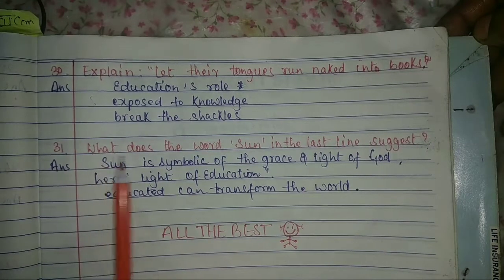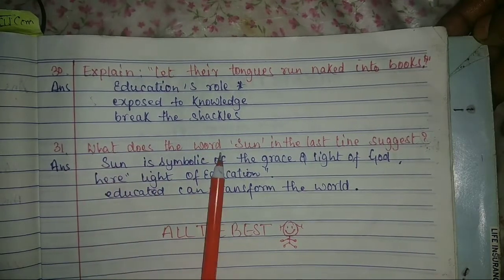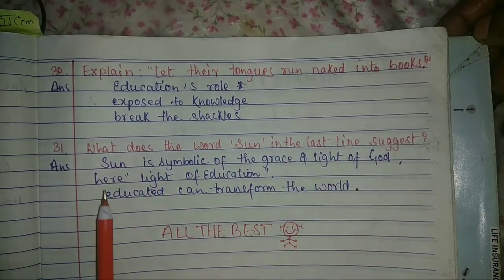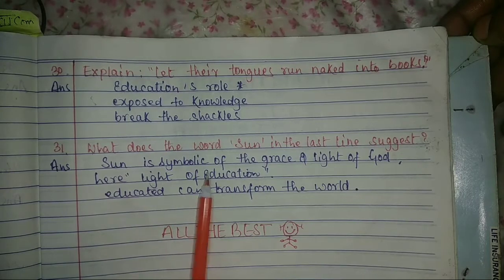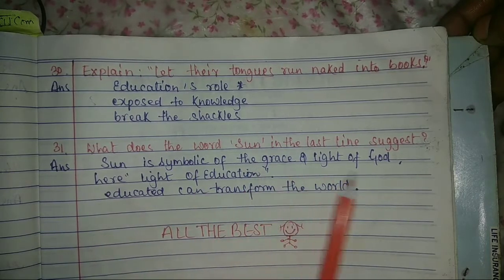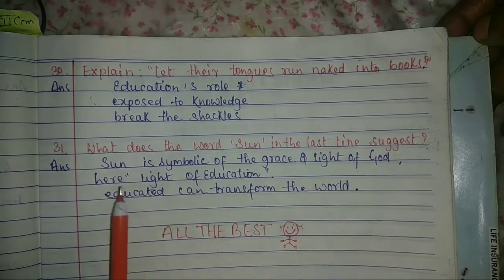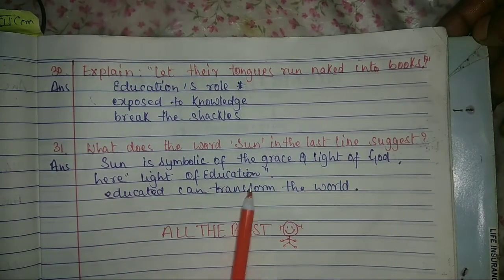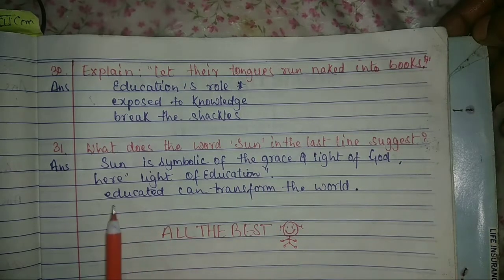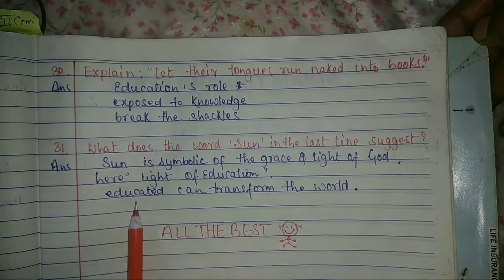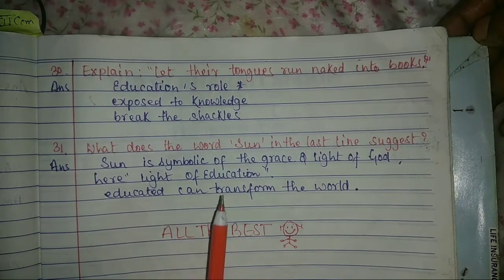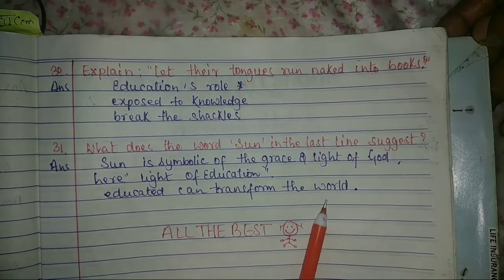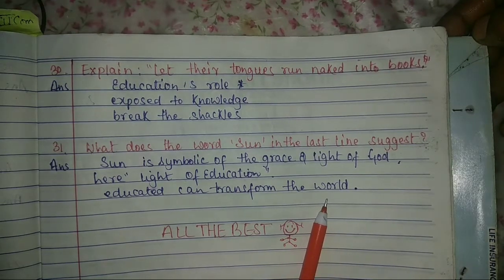Last question: What does the word 'sun' in the last line suggest? This sun is symbolic of the grace and light of God, and here the light of education is referred to by the sun's light. Everybody should be educated in order to transform the world — this is what the poet wants to tell us.